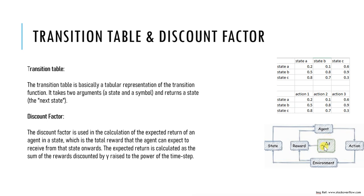The discount factor takes a value between 0 and 1. When an agent receives a reward, it may affect not only the immediate state-action pair but also future rewards. The discount factor allows us to trade off the importance of immediate reward and future reward.